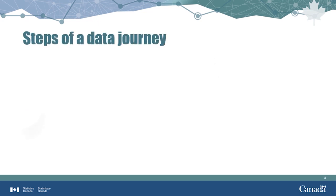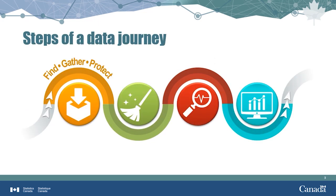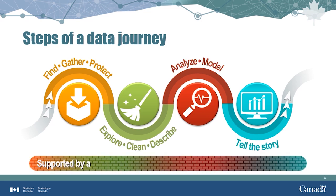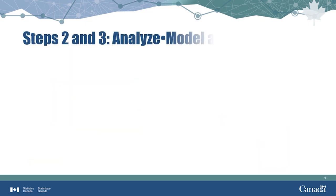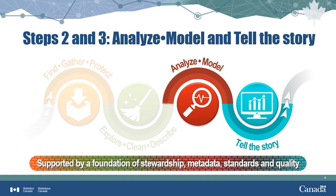This diagram is a visual representation of the data journey, from collecting the data to cleaning, exploring, describing, and understanding the data, to analyzing the data, and lastly to communicating with others the story the data tell. Correlation and causality fall under the final two steps of the data journey: analysis and modeling, and telling the story.